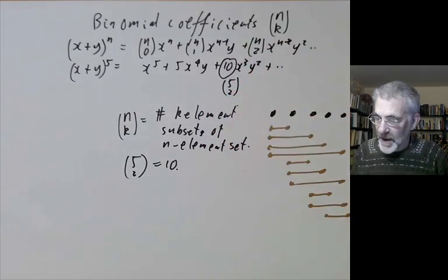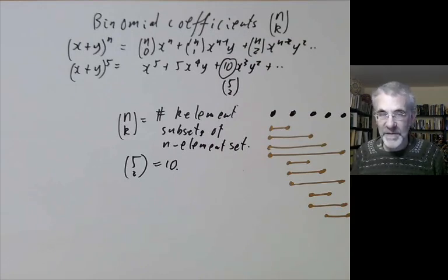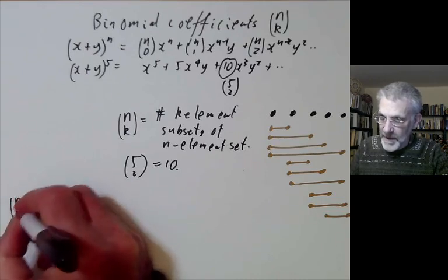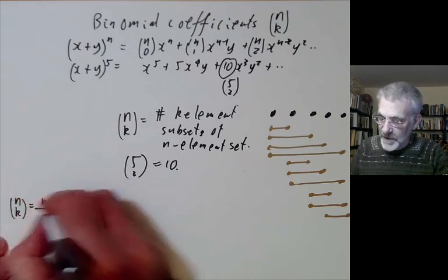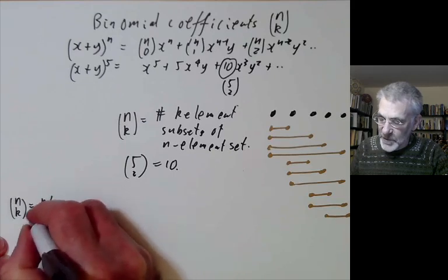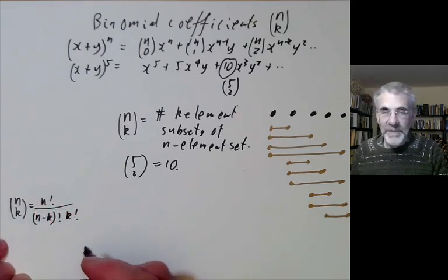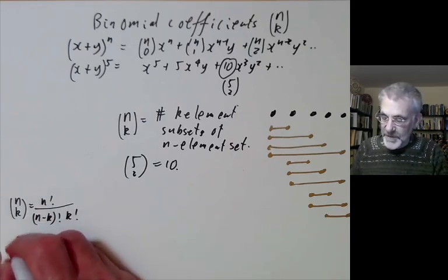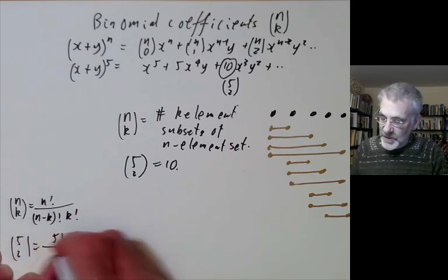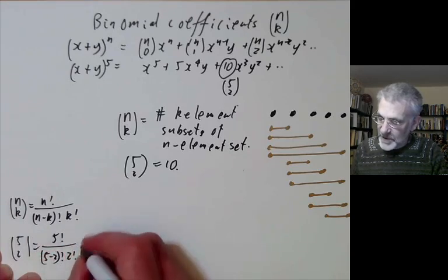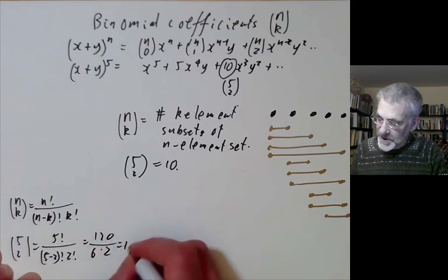A third way of defining binomial coefficients is by an explicit formula: n choose k equals n factorial over (n minus k) factorial times k factorial. For example, 5 choose 2 equals 5! over (3! times 2!), which is 120 divided by 6 times 2, which equals 10.